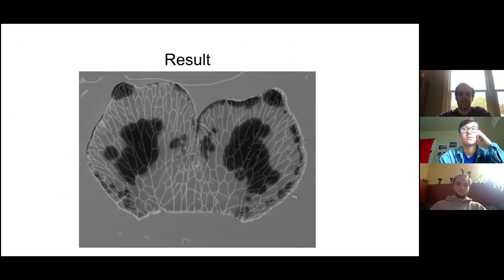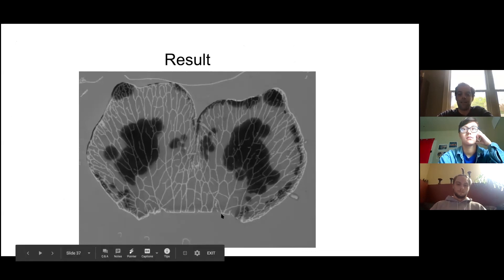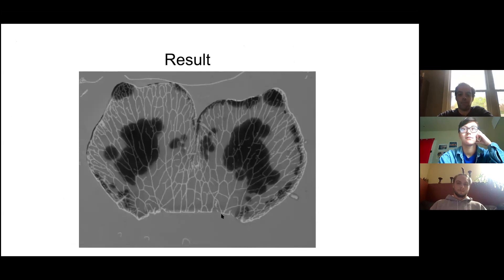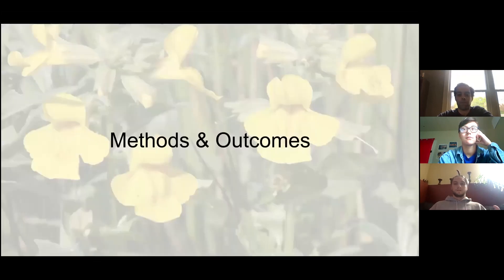In the overall pipeline, we start with original images, pre-process and apply k-means clustering to the petal image, flood fill both, then translate and overlay them. The final result shows the veins mapped very well on top of the actual petal, which is sufficient for our purposes.